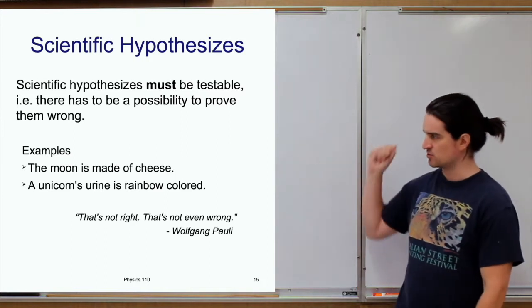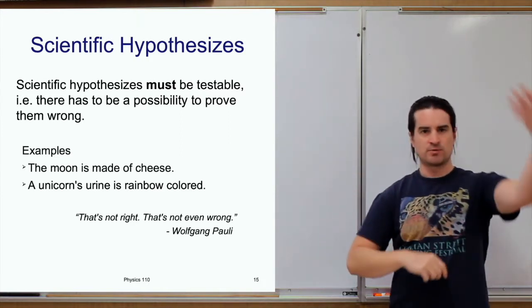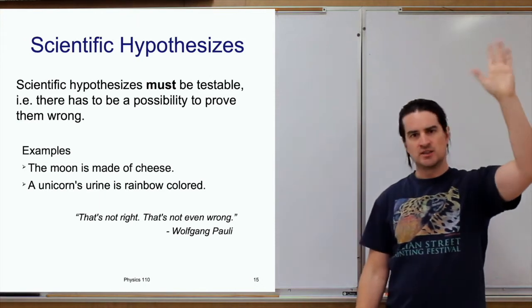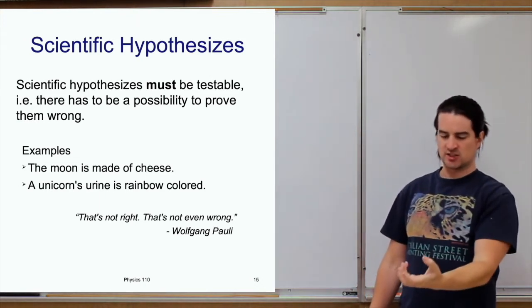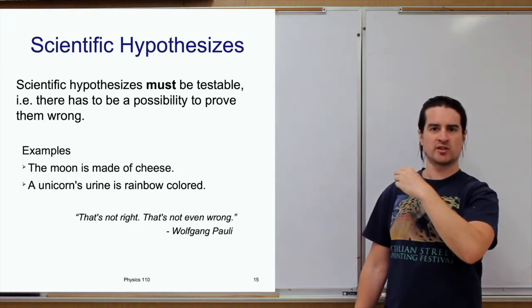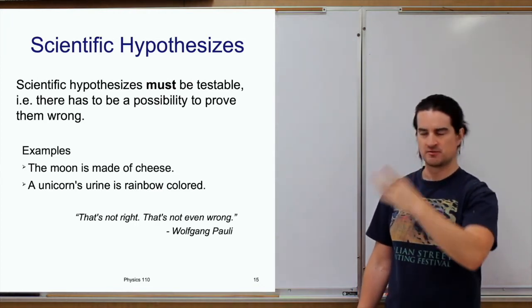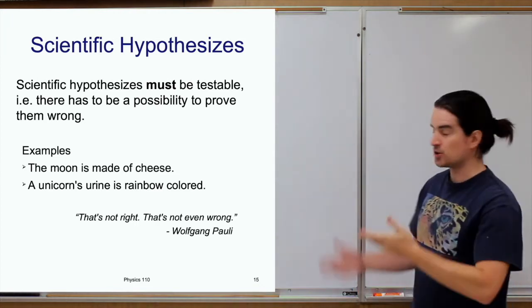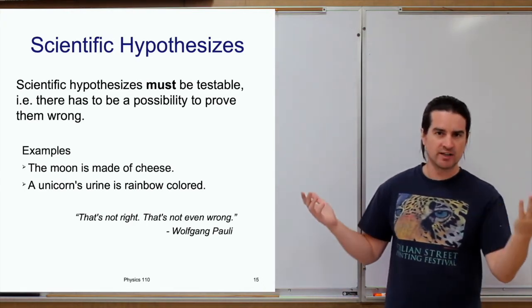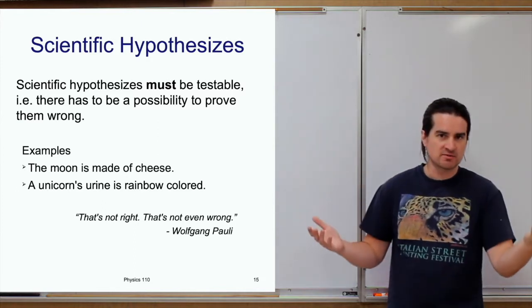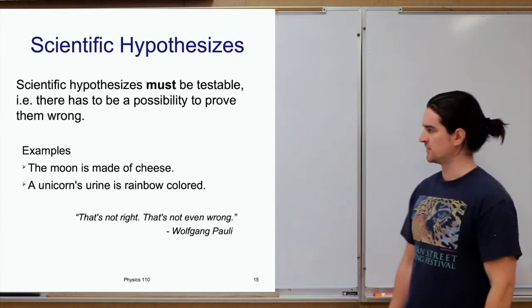This is my statement, the moon is made of cheese, okay, go and test it. Shoot a person, shoot a robot, shoot something up to the moon, grab a chunk of it, bring it back, test it. Oh, no, that's wrong. Yep, that's not cheese. All right, we tested it. There we go. Could have turned out that the moon was made of cheese. Who knows? Well, we know now. But before we knew, it's a possibility, right? And it's testable. That's the key.